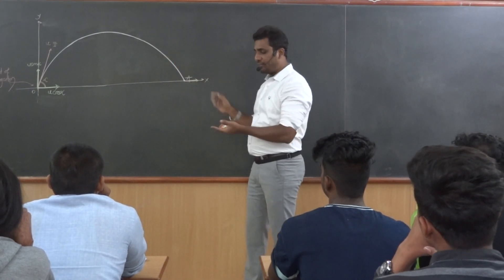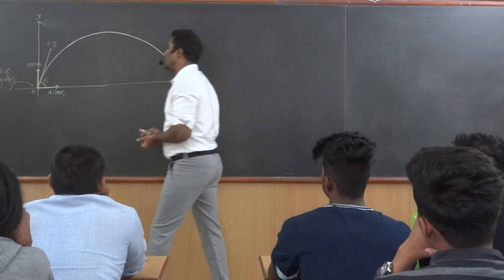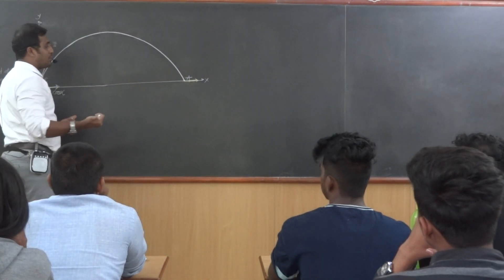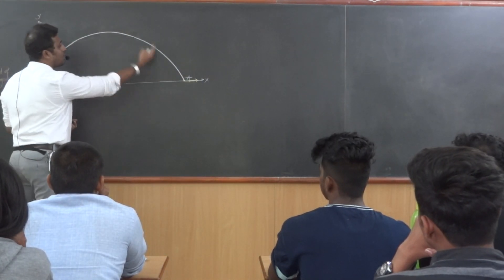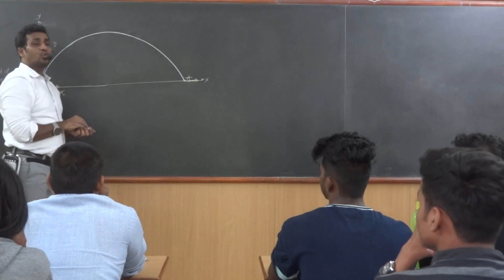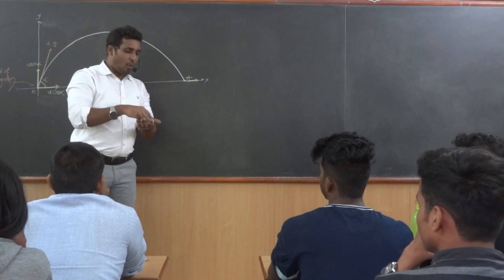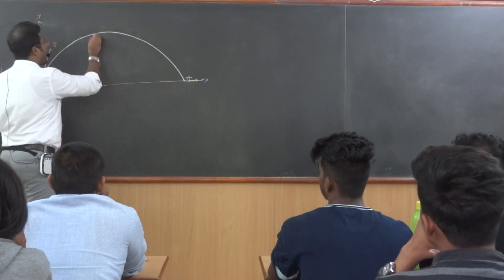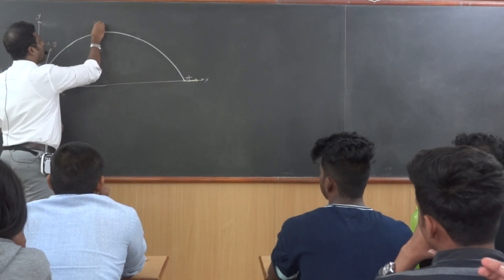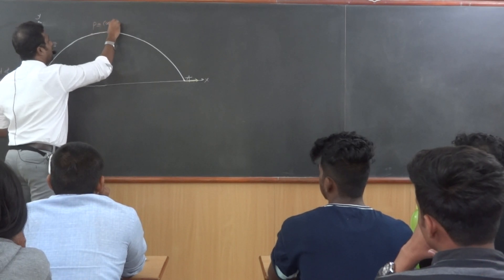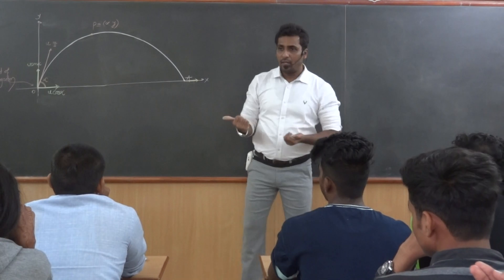Now, let us see what that equation of the curve is. To find the locus, you should always select a variable point on the curve. I am going to select this point as P, and its coordinates are x, y — the variable point is (x, y).